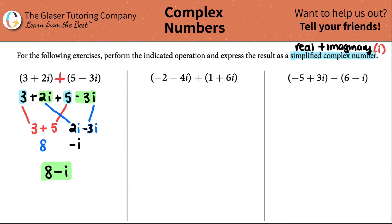Not bad, guys, right? Let's do the same thing for the second one. We have a negative 2 minus 4i plus 1 plus 6i. This whole thing is being added to this whole thing. Do we really need those parentheses? No, we're not really multiplying.